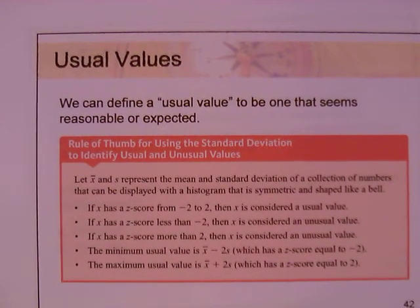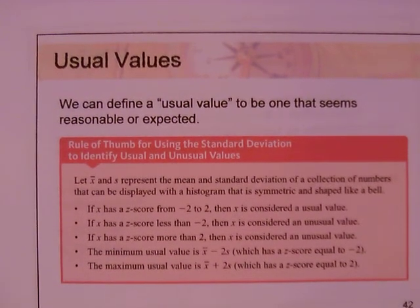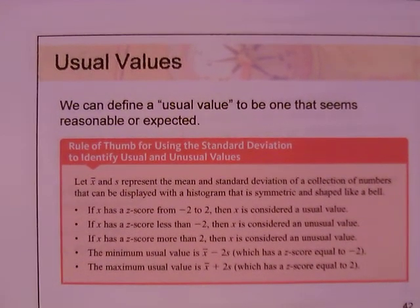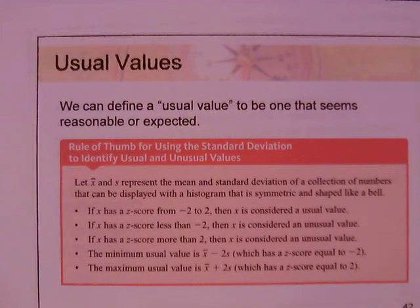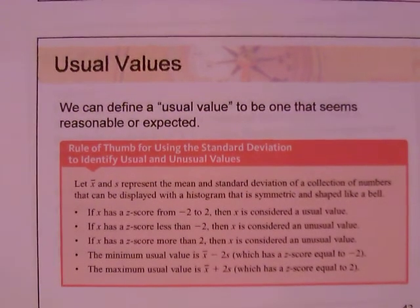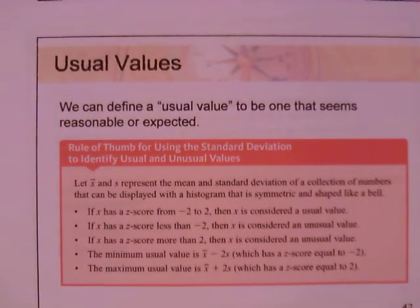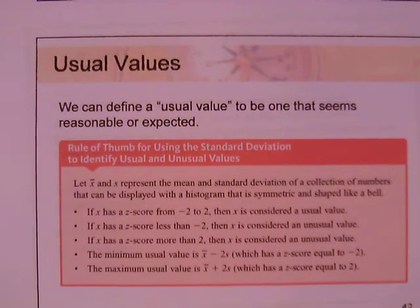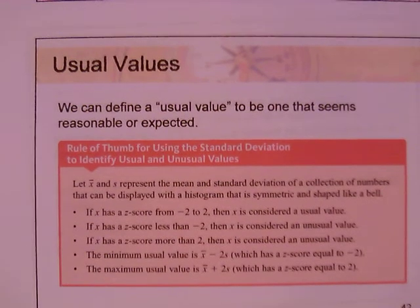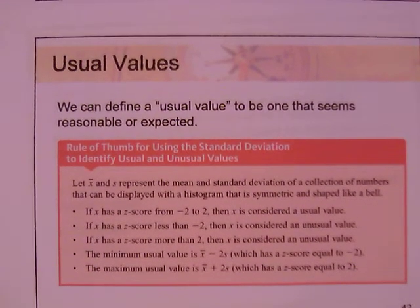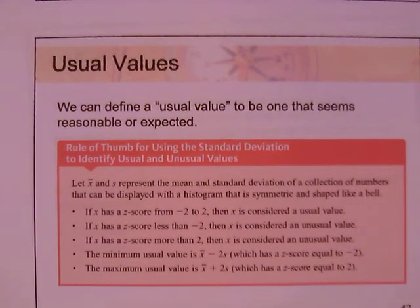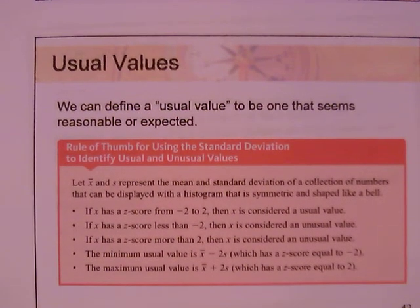We can define a usual value to be one that seems reasonable or expected. Here's the rule of thumb for using standard deviation to identify usual and unusual values. We let X-bar and S represent the mean and standard deviation of a collection of numbers that can be displayed with a histogram that is symmetric and bell-shaped. If X has a Z-score from negative 2 to 2, then X is considered a usual value.